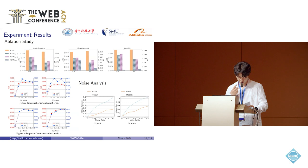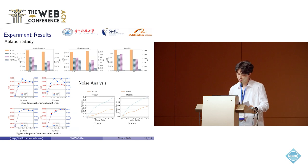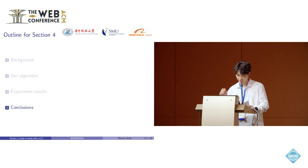We also conduct a robustness experiment to check model robustness under noisy interactions. We continue adding a certain portion of noisy examples, such as 5%, 10%, or more negative user-item interactions into the training set. The experimental results demonstrate the robustness of KGTN.